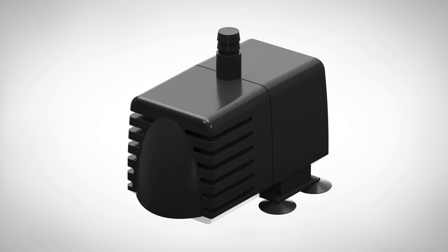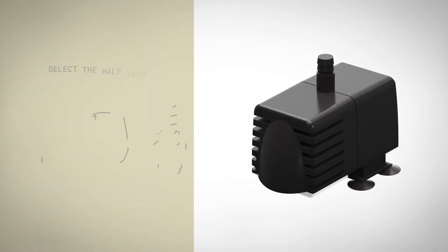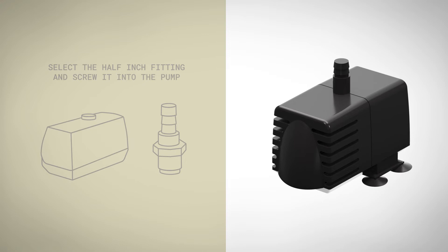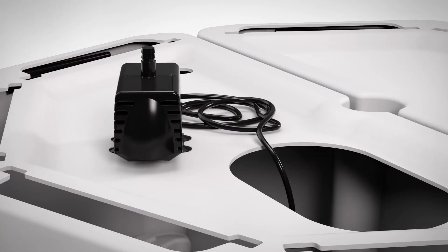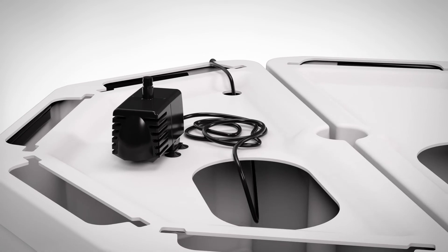Open the box containing the submersible pump. Select the half inch fitting and screw it into the pump. Set the pump on top of the left tank lid and thread the power cord down through the large oval opening and then back out of the tank through the small round opening in the lid.